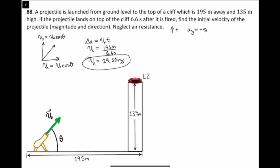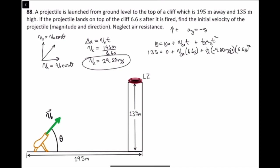The y-component of the velocity is found using the kinematic equation: y equals Vy-initial times t plus one-half times the acceleration in the y-direction times t-squared. The final displacement in y is 135 meters, the initial position was 0, and the time is 6.6 seconds. Substituting: 135 = Vy·(6.6) + ½·(−9.8)·(6.6)². Solving, the y-component of the initial velocity equals 52.79 meters per second.